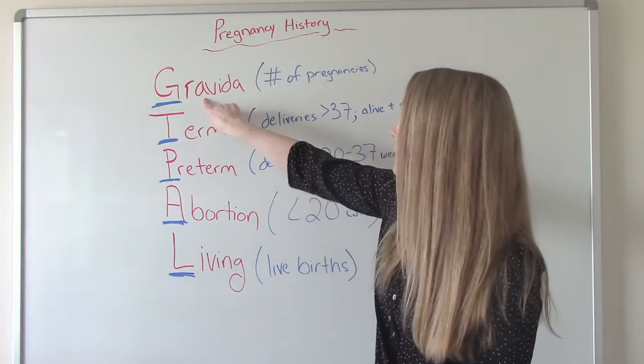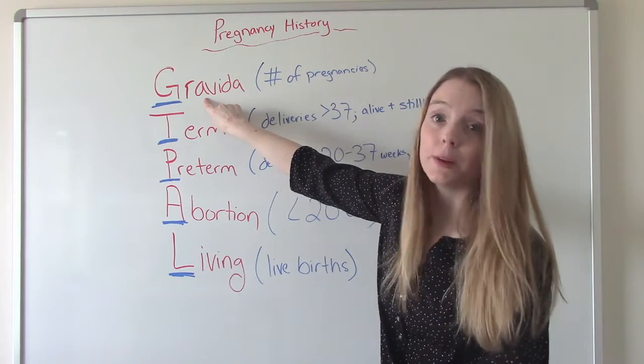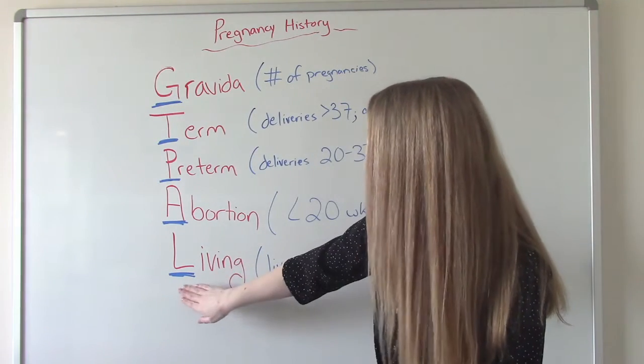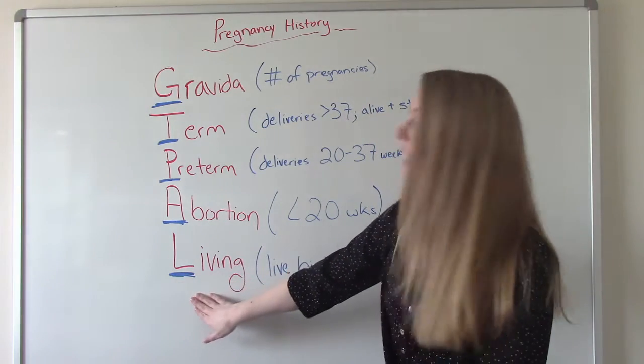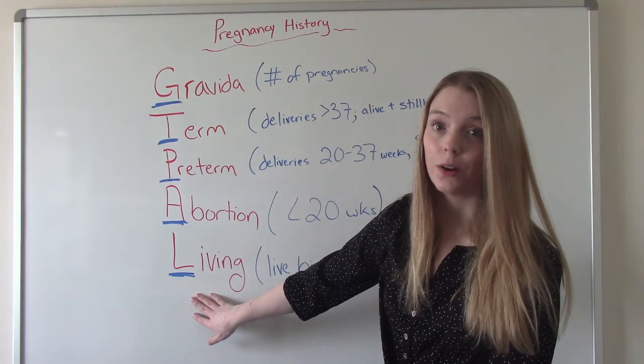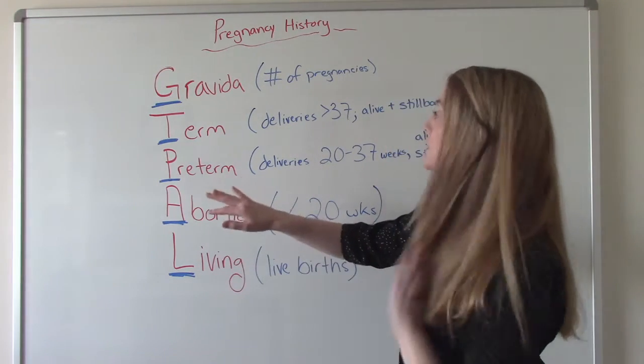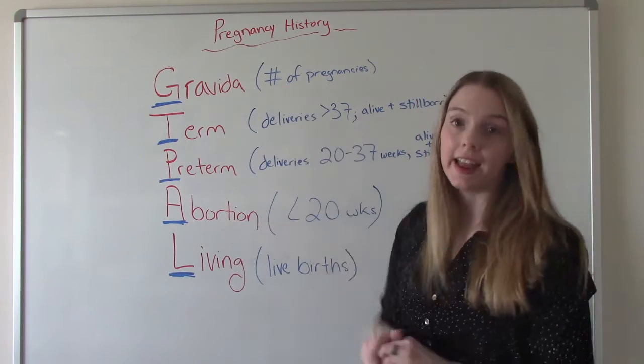So if you have your G1, you've been pregnant once but it's with twins, and then you've delivered those babies happy and healthy, no problems, they're living, now you have your L as two because you had two babies in there. So just remember, when it comes to multiples, they count as one for G, T, P, and A.